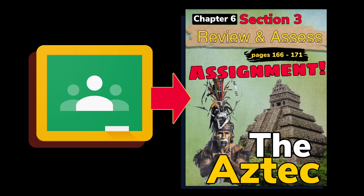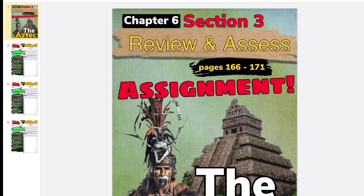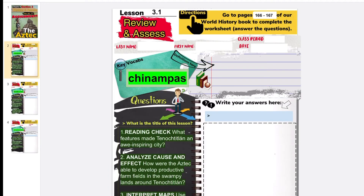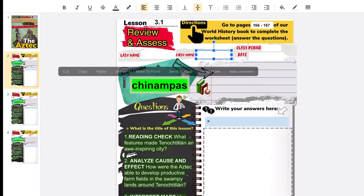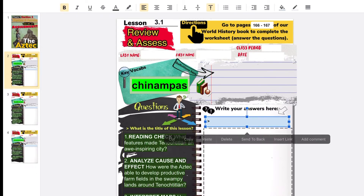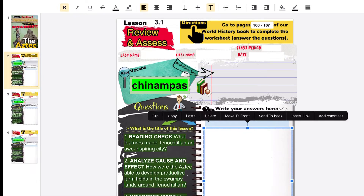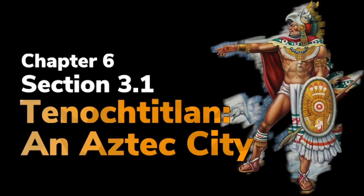Go back to our Google Classroom and open the Review NSS assignment, Chapter 6, Section 3, the Aztec. Put the answers to those review NSS questions in our Google Slide, in the first slide. Don't forget to fill in your last name, first name, and all that information. Be sure to put the definition of the key vocabulary. If you are aiming for full credit, you need to: number one, have the correct answers; number two, use your own words; and number three, write in complete sentences. That is our Lesson 3.1 of Chapter 6, Tenochtitlan, an Aztec city.